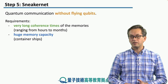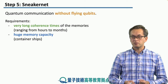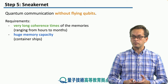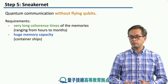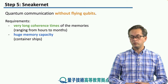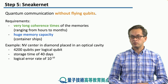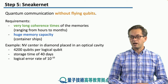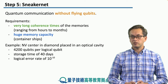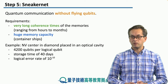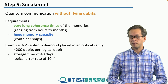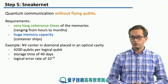The requirements are that we need a mobile quantum memory unit with extremely long coherence times — we're talking about hours, or preferably months. In order to achieve a high average rate of communication or entanglement distribution, we also require a large memory capacity. Think of either a plane or even better a container ship loaded with these quantum memories. Just to give you an idea of some numbers: if you consider NV centers in diamond placed in optical cavities, and each logical qubit is encoded with the help of 4200 physical qubits, the storage time or coherence time can be up to 40 days — extremely long. And the logical error for this encoding is as low as 10 to the minus 10. These are the sort of numbers we're thinking about when we want to achieve quantum communication without flying qubits using the quantum Sneakernet.